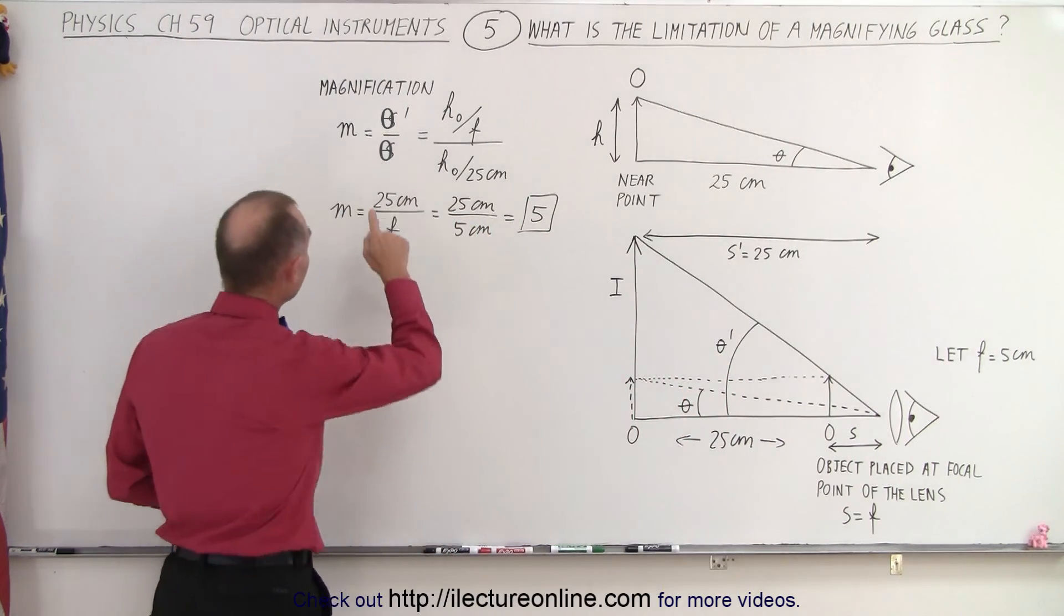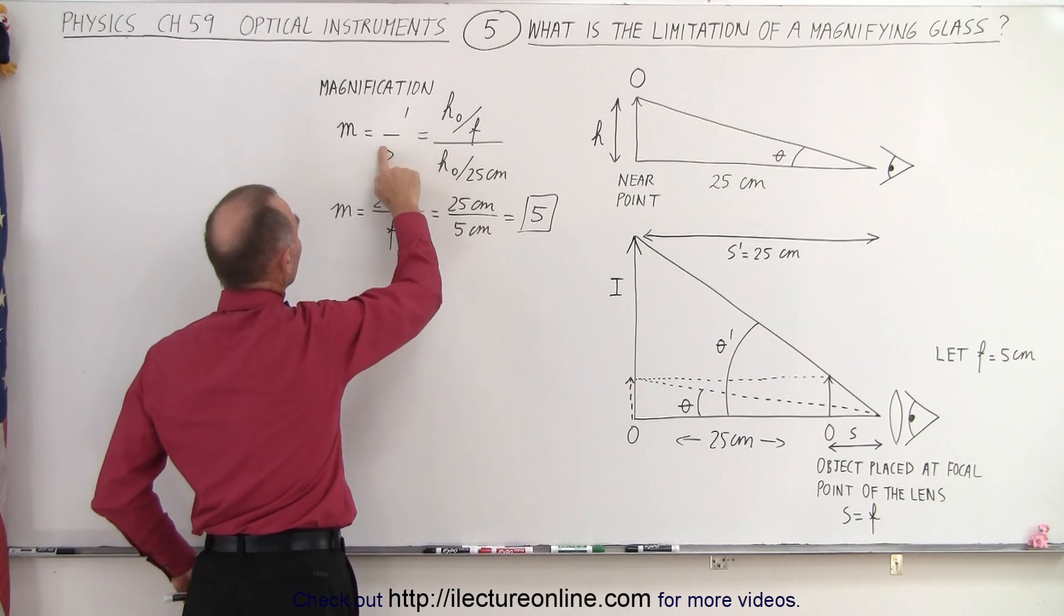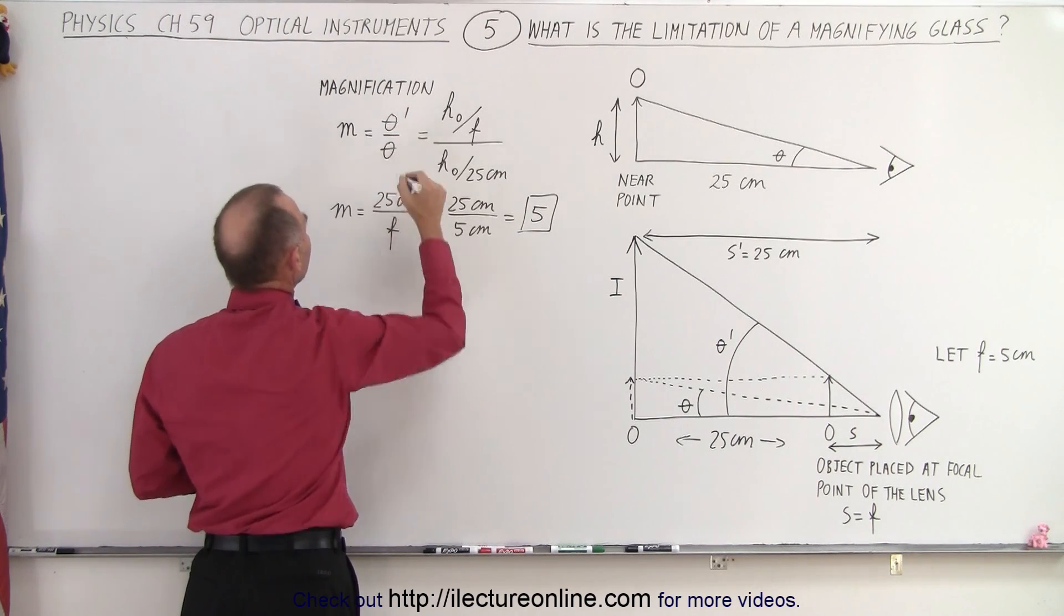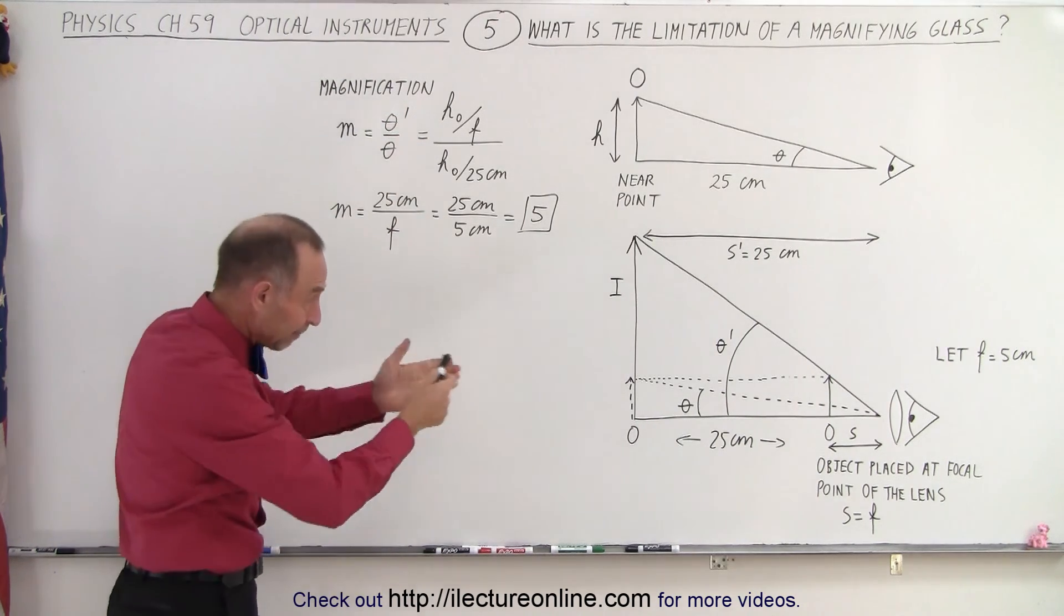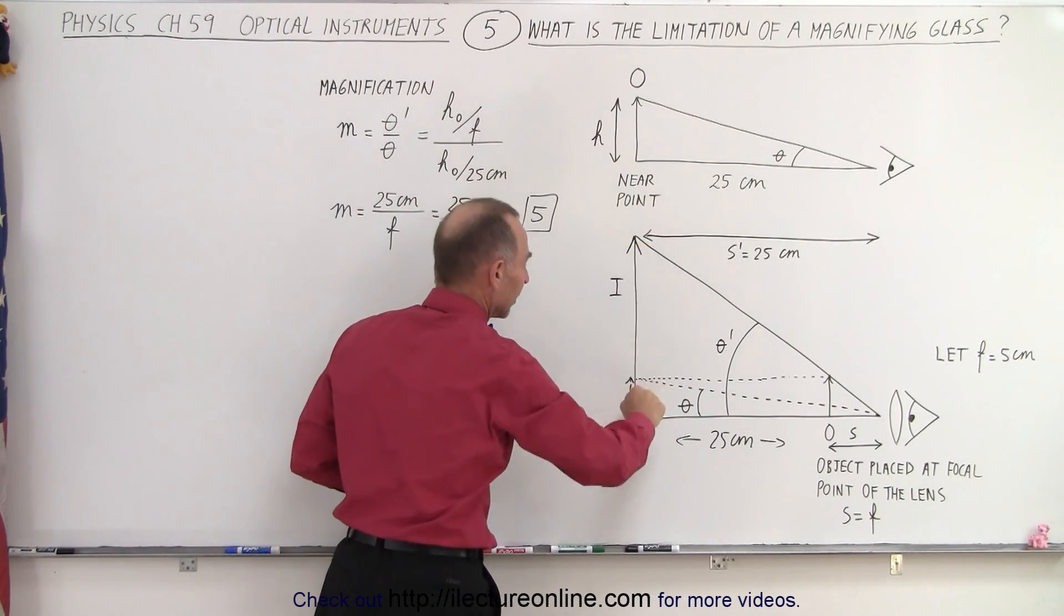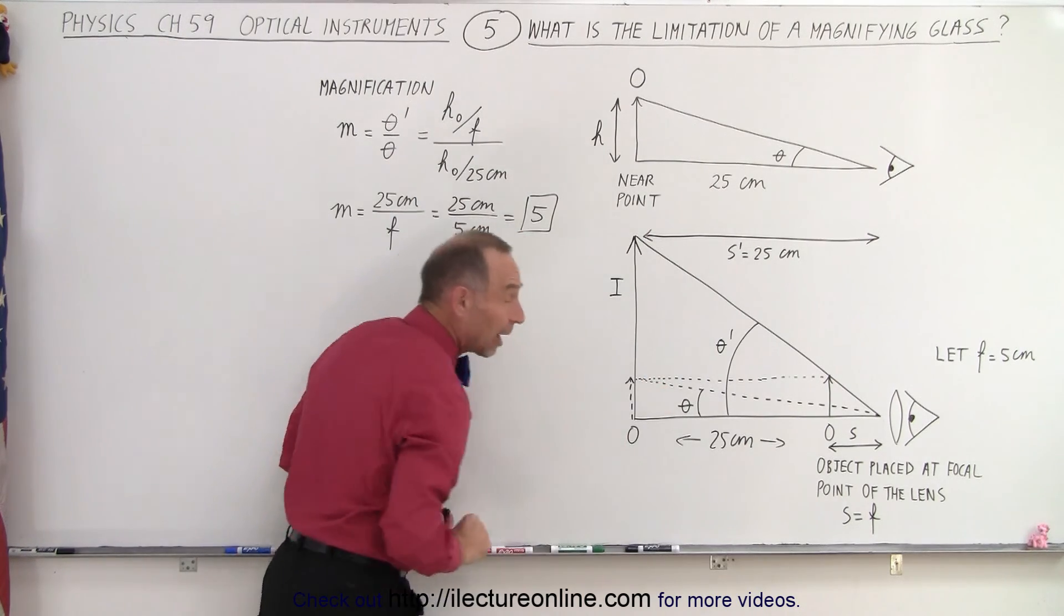And essentially, the magnification of the magnifying glass would be the ratio of these two angles. So here we calculate the magnification. I'm going to put theta prime and theta. That is a better way of looking at it. So it's going to be the ratio of the angle subtended by the image divided by the angle subtended by the object if the object was there.